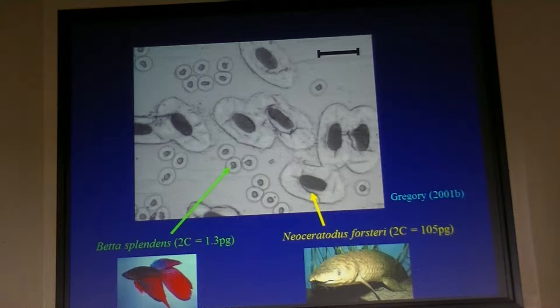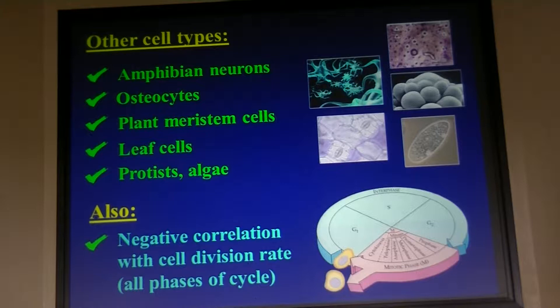You just couldn't have a cell this small if you had a genome that big, basically. I don't want to give the impression that this is all based on blood cells, although that is one of the best studied types of cells, in part because it's easiest to get. But it also applies to neurons in amphibians, a variety of different plant cells, different single-celled organisms, and interestingly to the cells responsible for producing bone — the osteocytes.